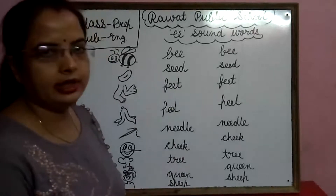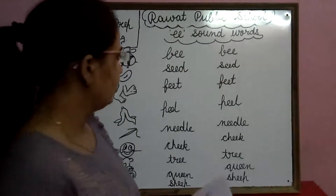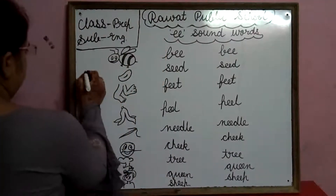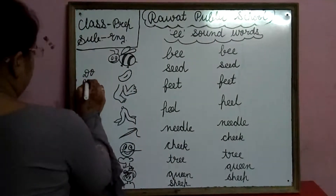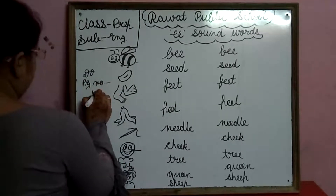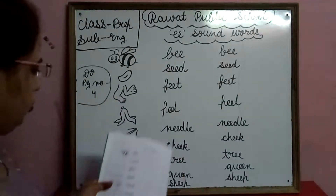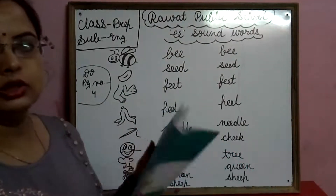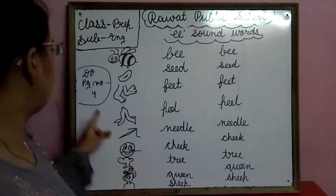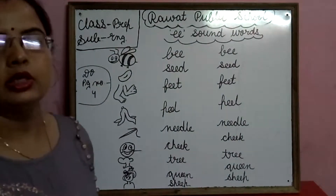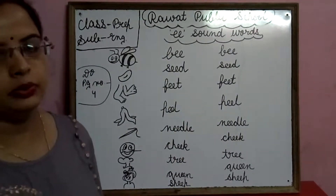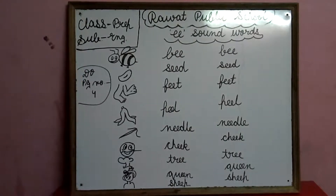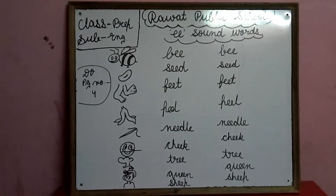Children, please learn and write double E sound words on page number 4. Do page number 4 in your book, write neat and clean properly. Thank you.